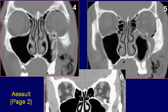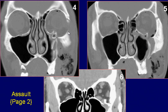Coronal CT images of the face in bone window settings reveal depression of the left orbital floor and lateral wall of the maxillary antrum with bony discontinuity.